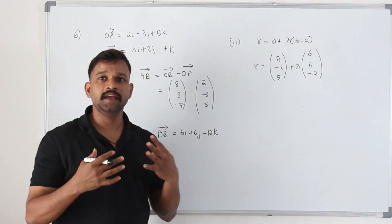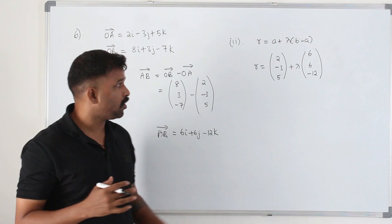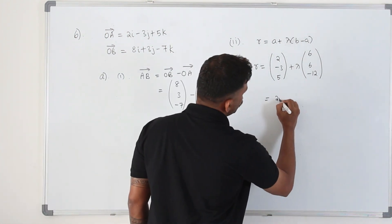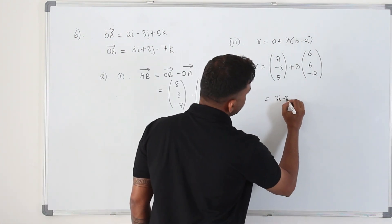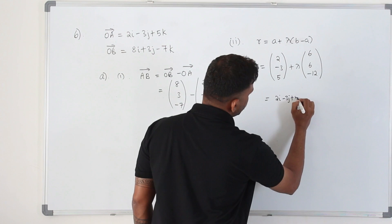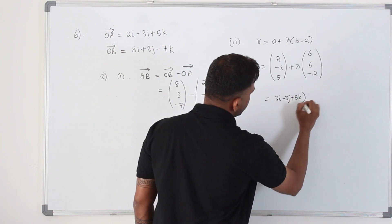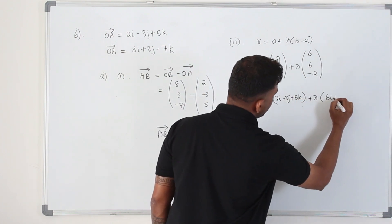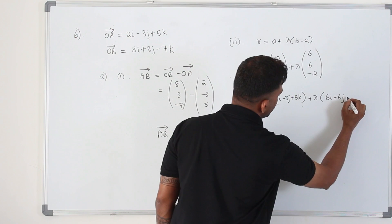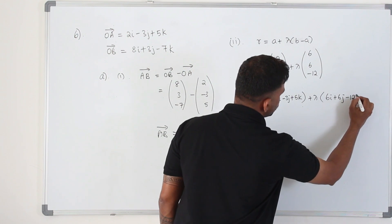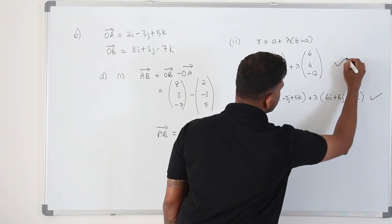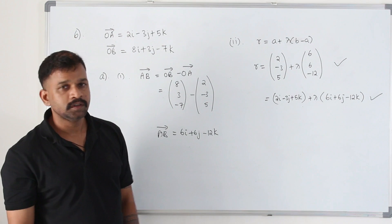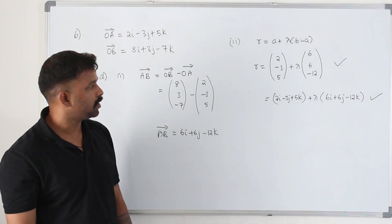If you want to write it in ijk form, you can write: 2i minus 3j plus 5k plus lambda times (6i plus 6j minus 12k). Both forms are correct, but do not write both — write either one.